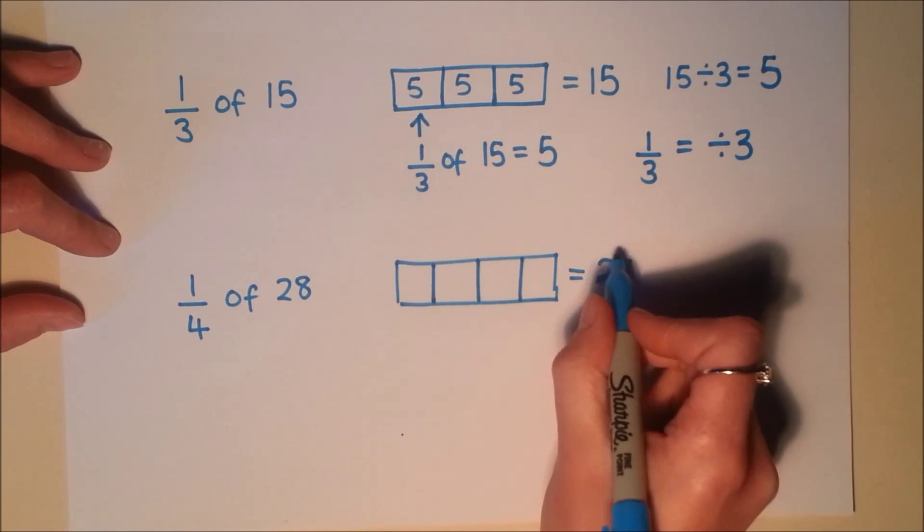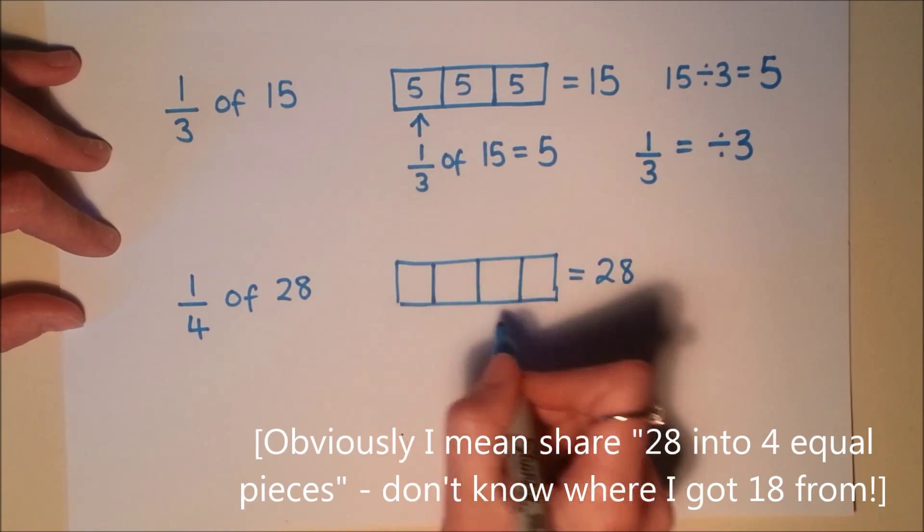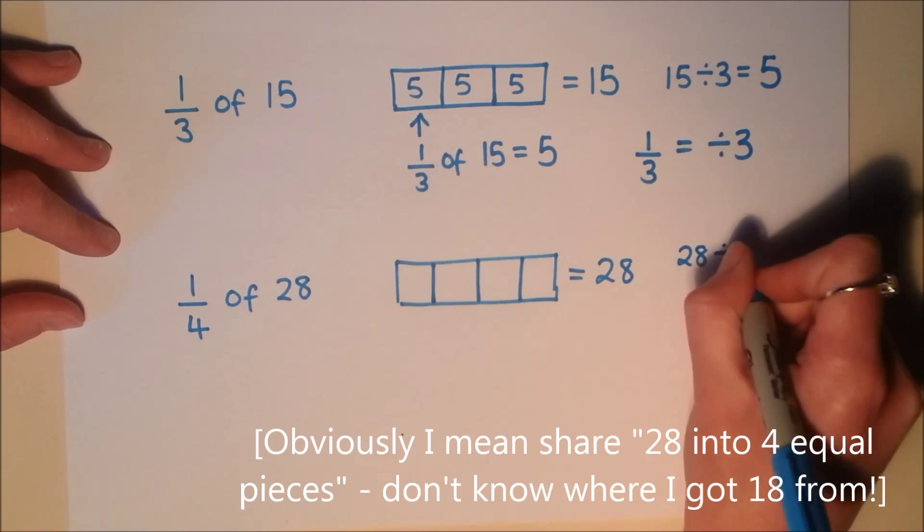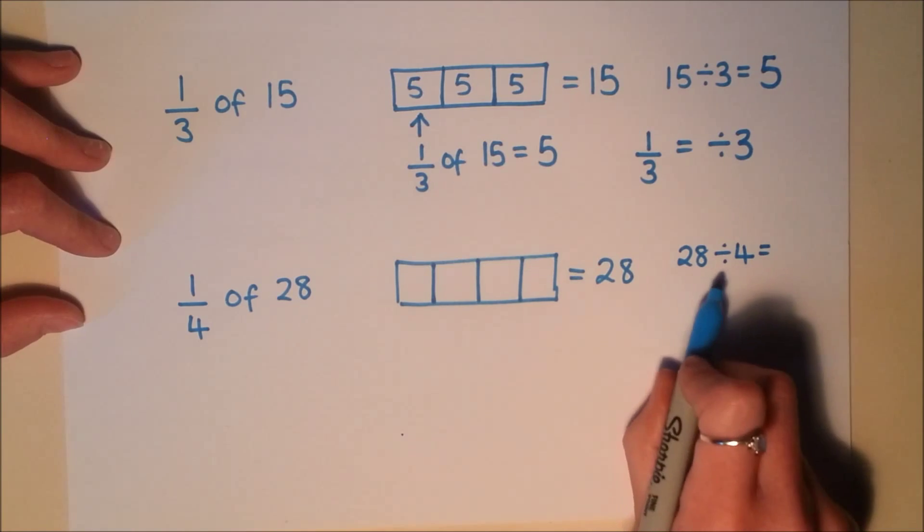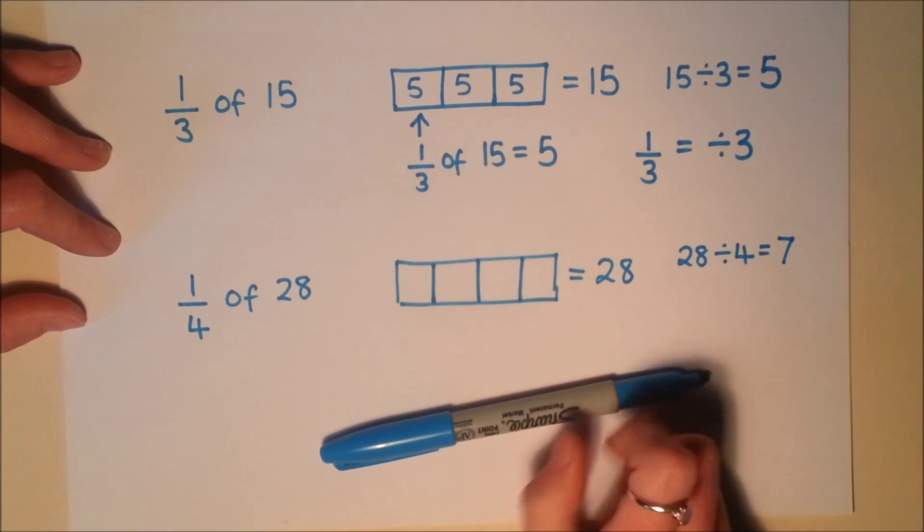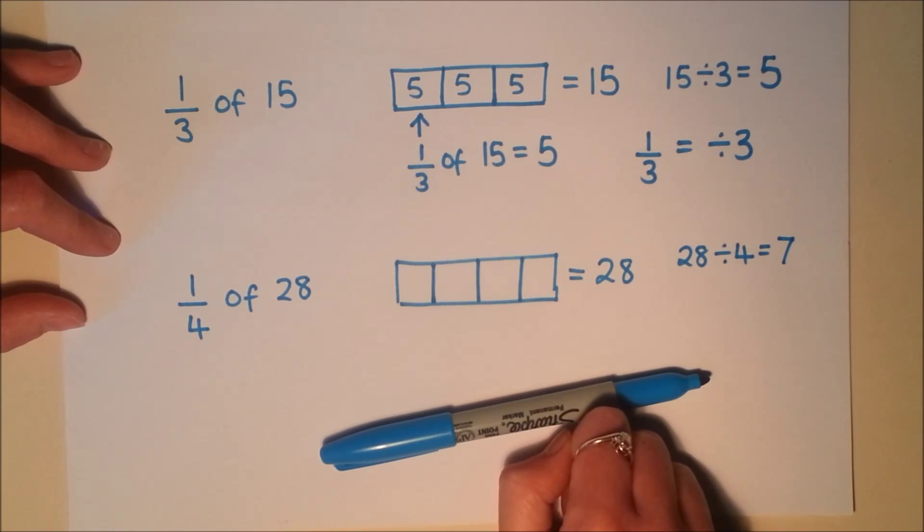I need to work out if I share 28 into 4 equal pieces, how big one piece will be. So 28 divided by 4. If you know your 4 times table, you'll know that this is 7. But again if you're not sure, count up in 4s until you get to 28.